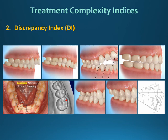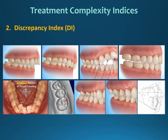The discrepancy index is used to evaluate the difficulty of cases presented to the American Board of Orthodontic Examination. Unlike the Little's irregularity index, it evaluates criteria from both dental models and cephalometric radiographs. The criteria assessed include overjet, overbite, open bite, occlusion, lingual and buccal posterior crossbite, and cephalometric variables. It is more complicated compared to the Little's irregularity index, but it appears to be more precise in describing the difficulty of a case.